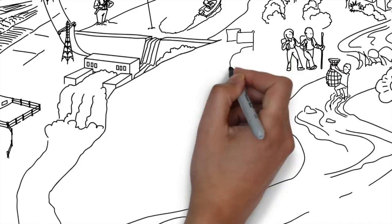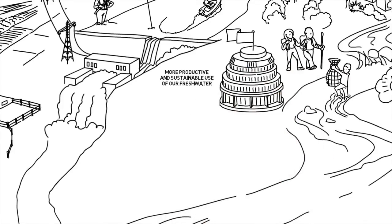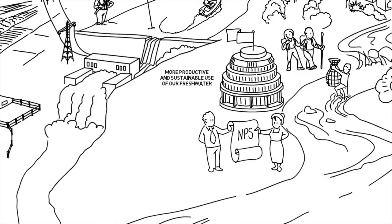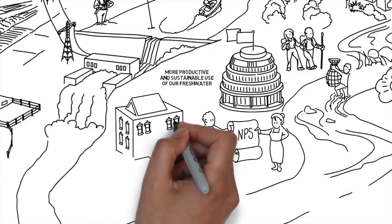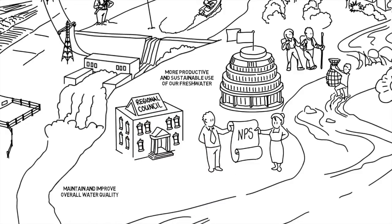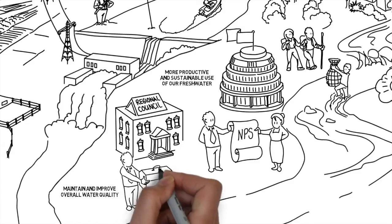The government has a plan for more productive and sustainable use of our fresh water. It's already given national direction to regional councils to set limits for water quality and quantity. They have to manage within them so they can maintain and improve the overall quality of water in their region. Now it's proposing more guidance and tools to help them do this.